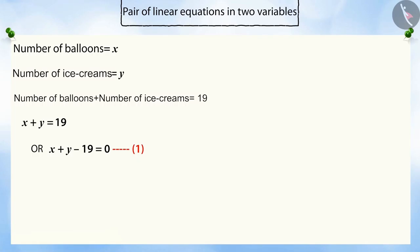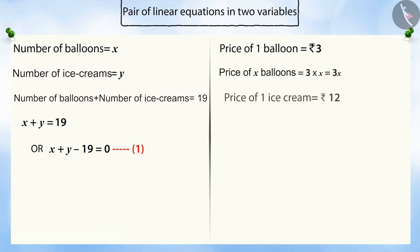Now let's see, if Rahul has spent 3 rupees on a balloon, then x balloons will cost 3 times x, that is 3x rupees. And similarly, Rahul has spent 12 rupees on an ice cream, then y ice creams will cost 12 times y, that is 12y rupees.